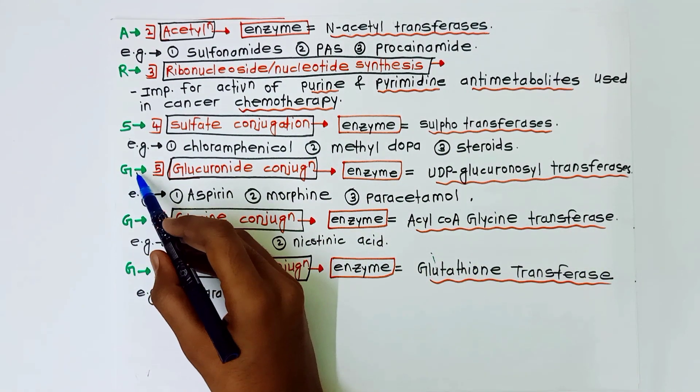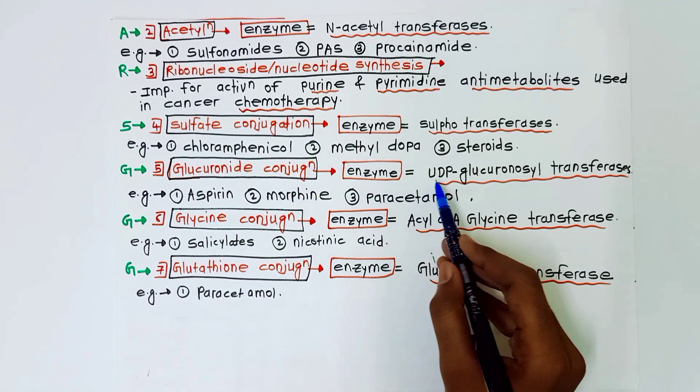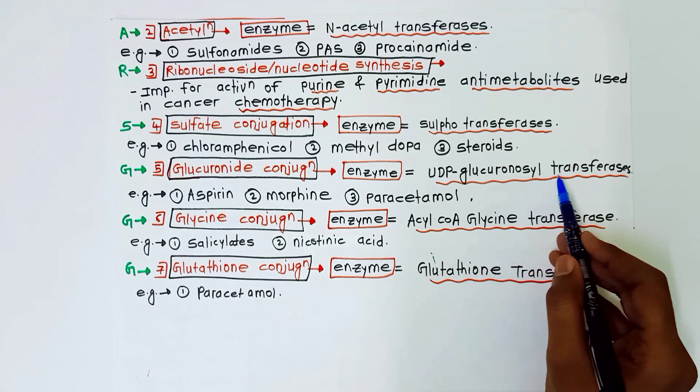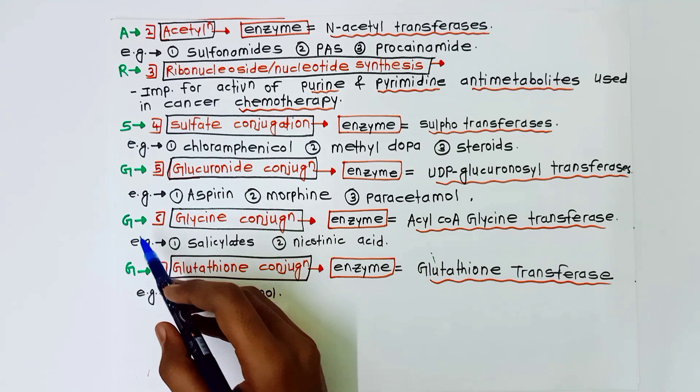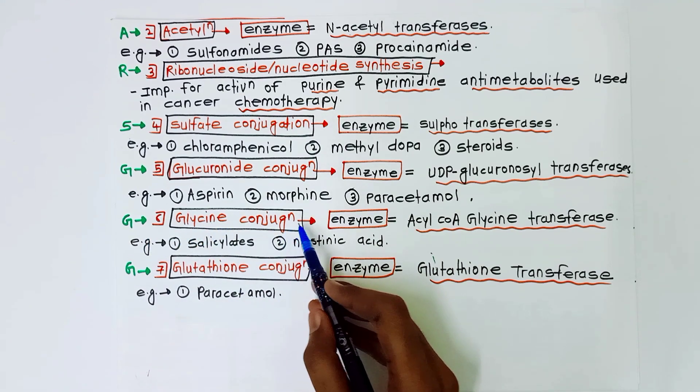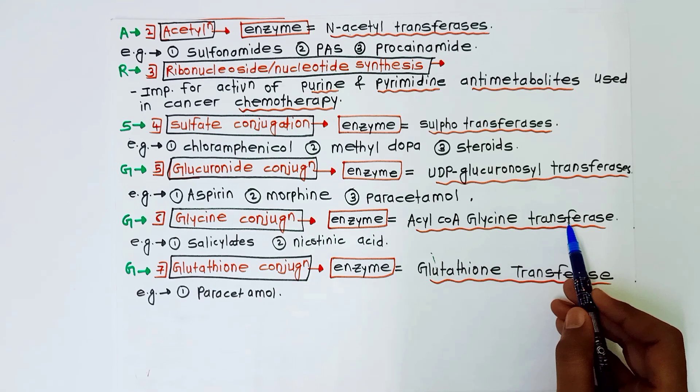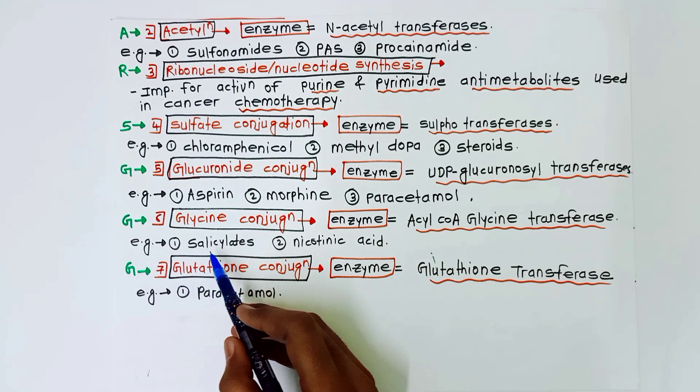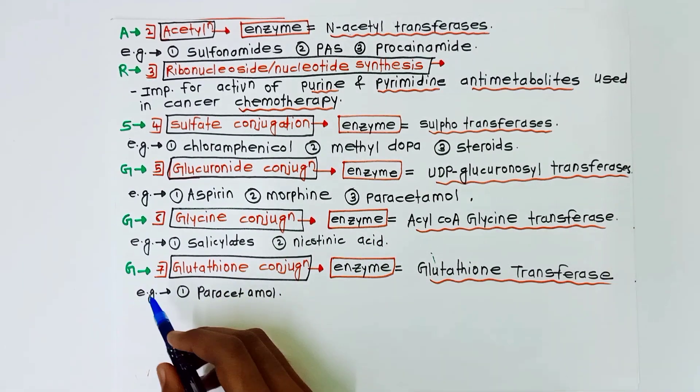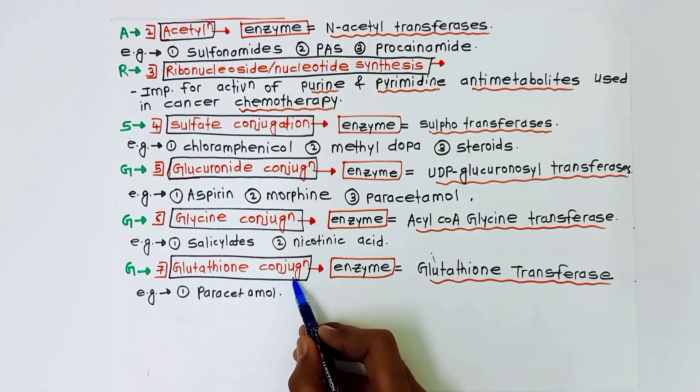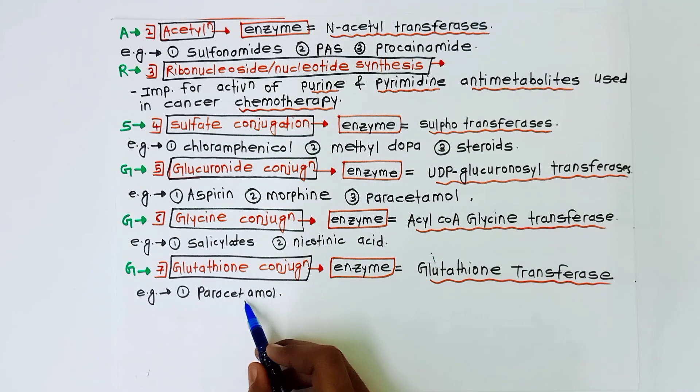G3: G for glucuronide conjugation - the enzyme involved in this is UDP-glucuronosyltransferases. Examples are aspirin, morphine, and paracetamol. Next G is for glycine conjugation - the enzyme involved is acyl-CoA glycine transferases. Example is salicylate and nicotinic acid. And last G is for glutathione conjugation - the enzyme involved in this is glutathione transferases. Example is paracetamol.